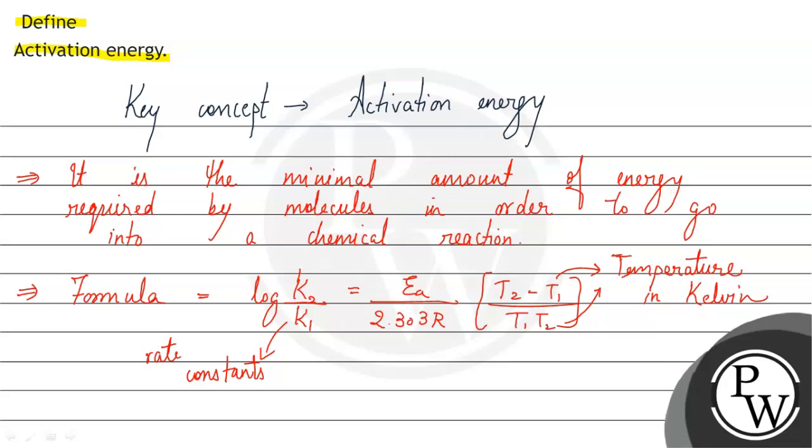Ea is the reaction's activation energy in joules per mole, and R is the ideal gas constant.